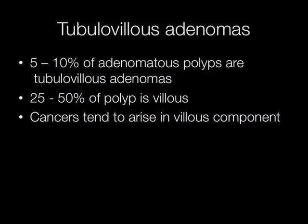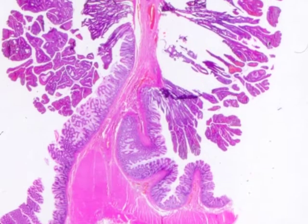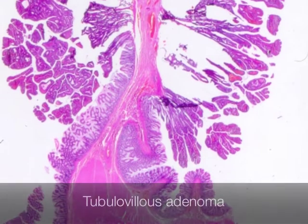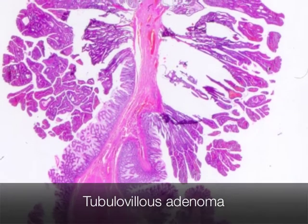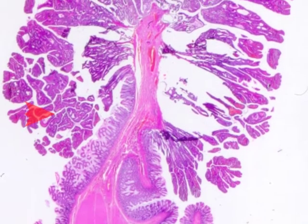5-10% of adenomatous polyps are tubulovillous adenomas. In these, 25-50% of the polyp is villous, and cancer tends to arise in the villous component. This is what a typical tubulovillous adenoma looks like down the microscope.